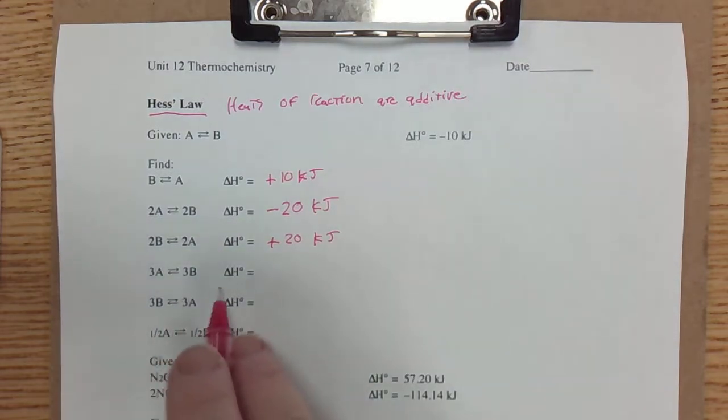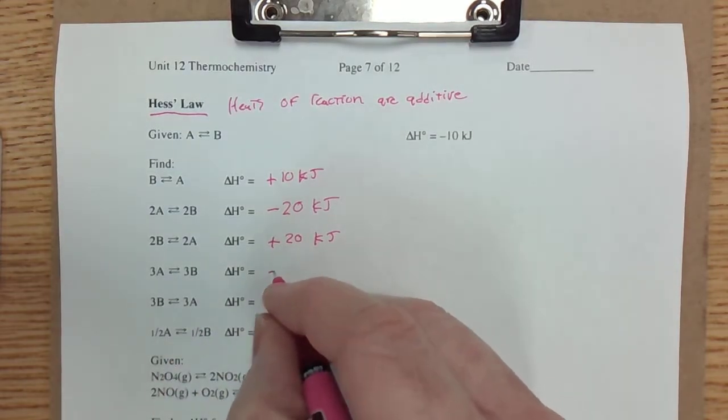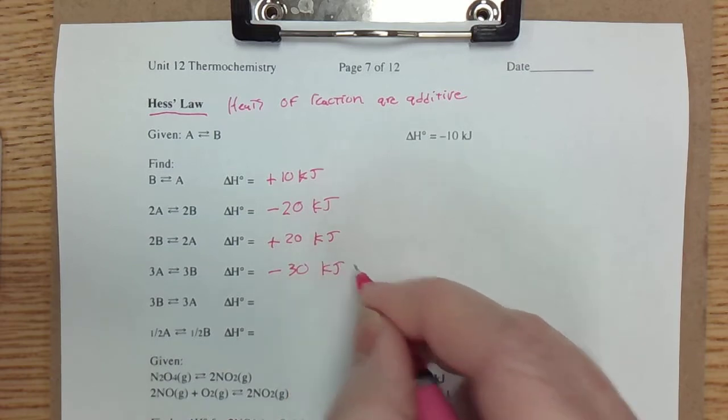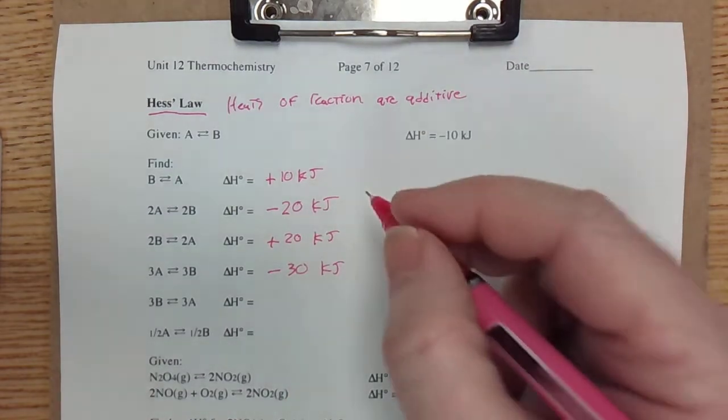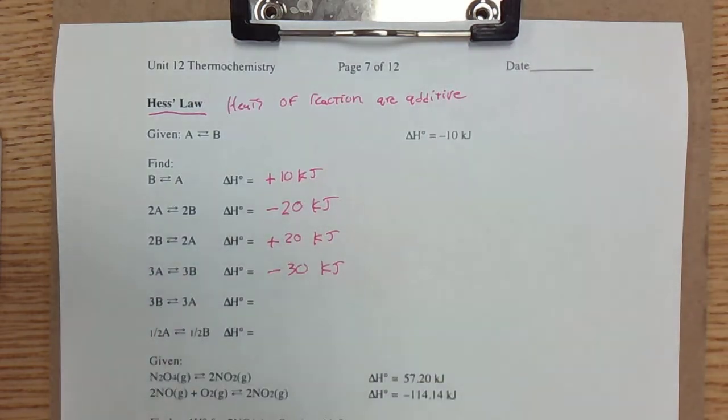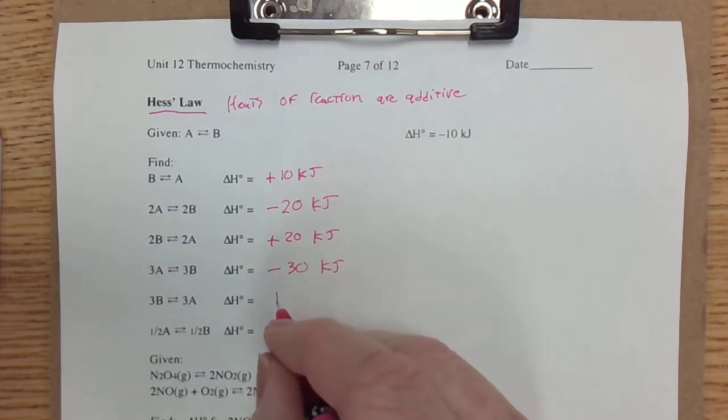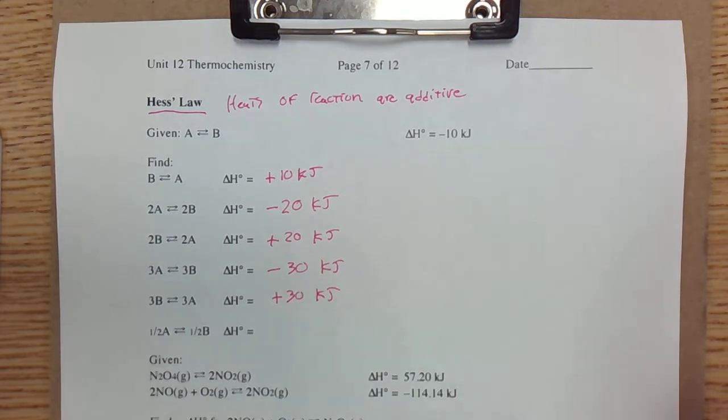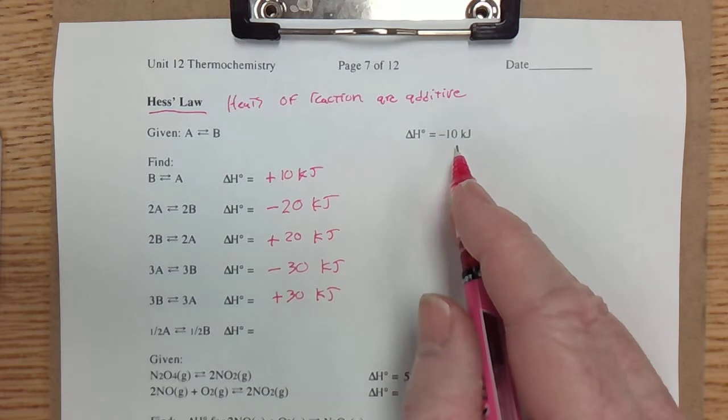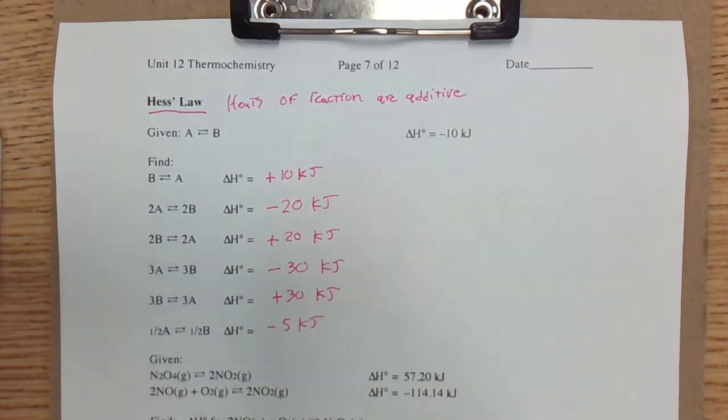If 3A is turning into 3B, delta H naught would be negative 30 kilojoules. We're just multiplying this value by the new coefficients. It's a ratio. For 3B to 3A, which is the reverse, it would be positive 30 kilojoules. For 1/2 A going to 1/2 B, we're multiplying by 1/2, so that's negative 5 kilojoules.